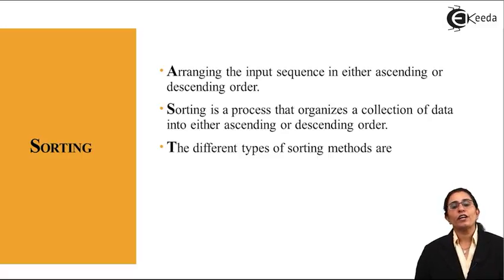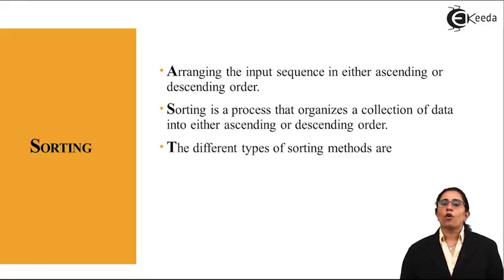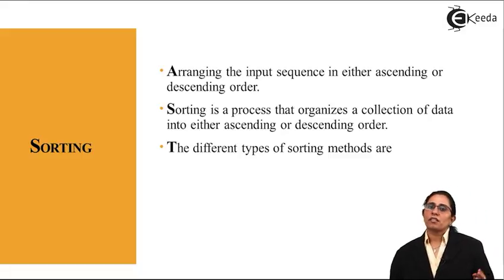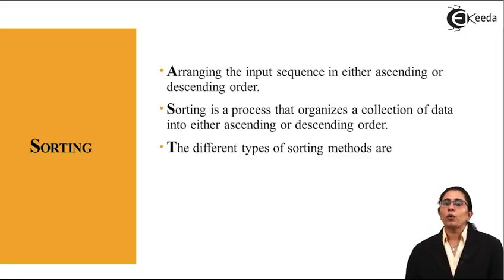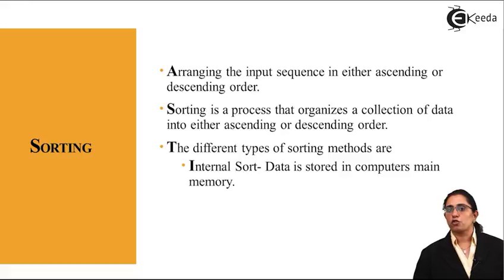The different types of sorting methods - we have seen people can stand from tallest to smallest or smallest to tallest. In computers, how do we do it? The different sorting methods are, the first one is known as internal sort.